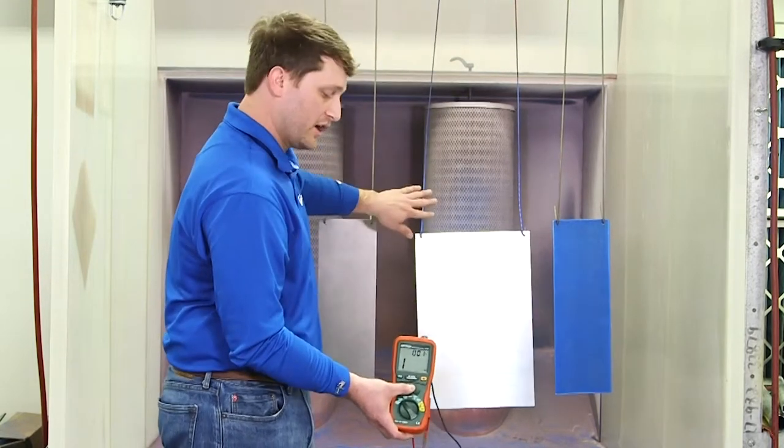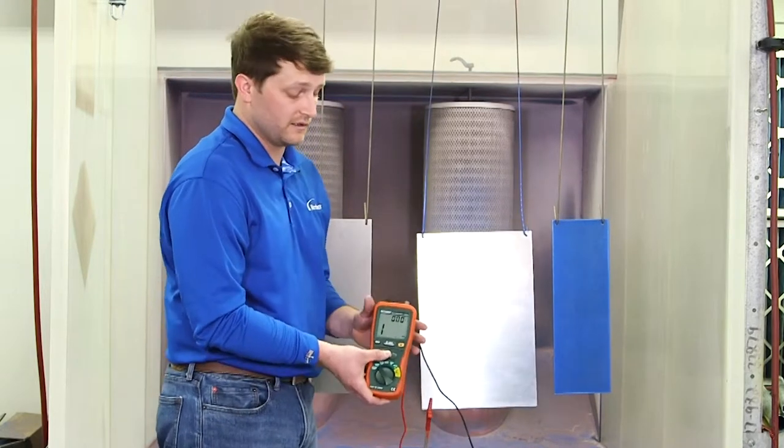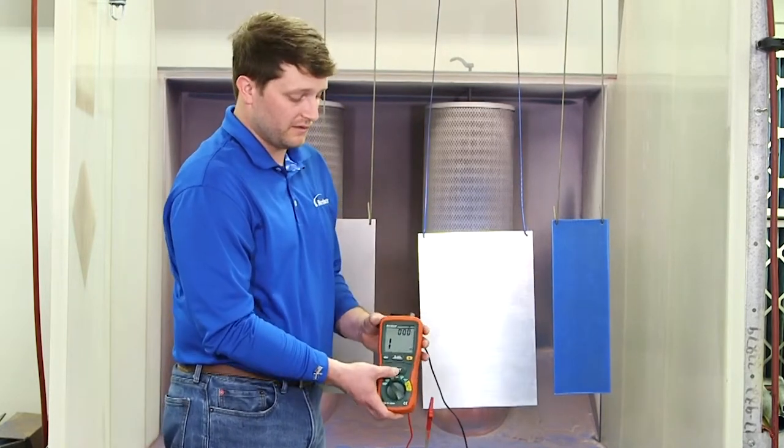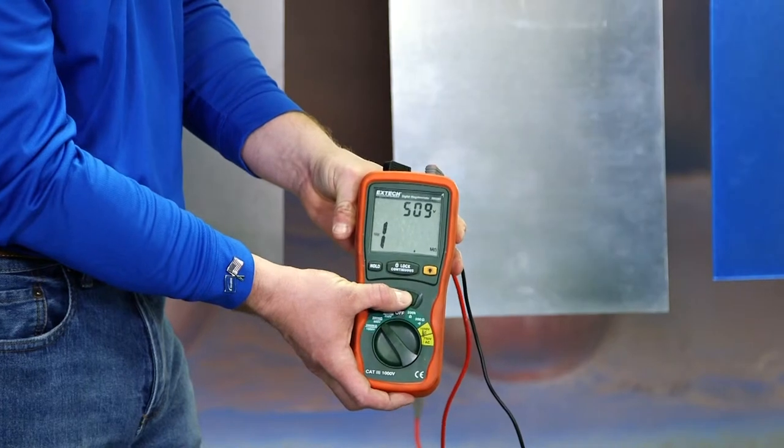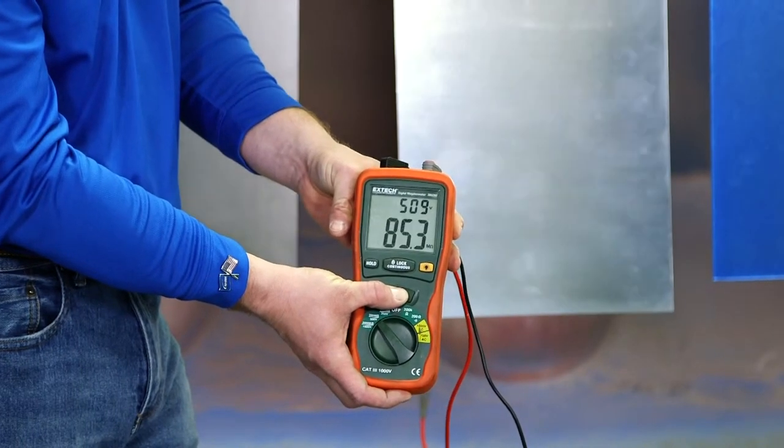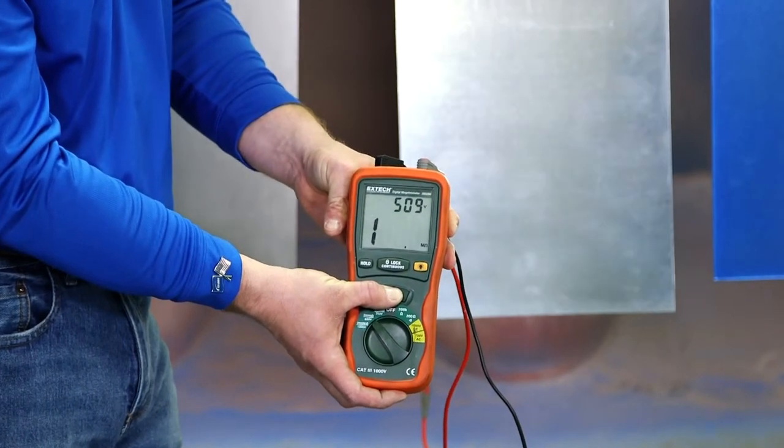The second setup has coated hooks acting as an insulator, so it should not show a ground. This is showing out of range.